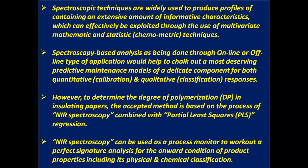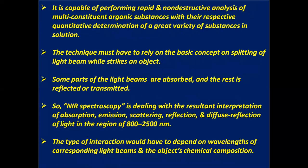To determine the degree of polymerization in insulating papers, the accepted method is based on NIR spectroscopy combined with partial least squares (PLS) regression. NIR spectroscopy can be used as a process monitor to work out a perfect signature analysis for the condition of product properties including its physical and chemical classification. It is capable of performing rapid and non-destructive analysis of multi-constituent organic substances with their respective quantitative determination of a great variety of substances in solution.